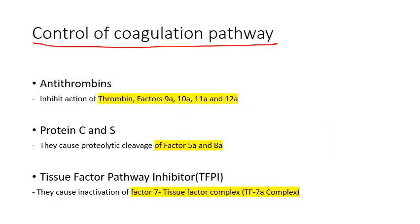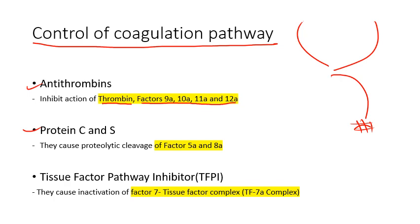The coagulation pathway is controlled by three groups of proteins. Number one: antithrombins, which inhibit thrombin and serine proteases like factors 9a, 10a, 11a, and 12a. Number two: protein C and S, which cause proteolytic cleavage of activated factors 5a and 8a. Number three: tissue factor pathway inhibitor, which inactivates the tissue factor–factor 7a complex, stopping activation of the common pathway. Defects in these proteins can lead to various thrombotic disorders.